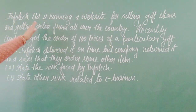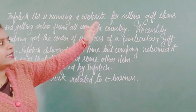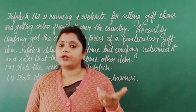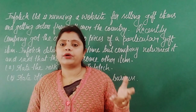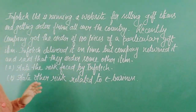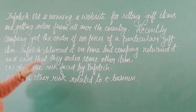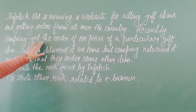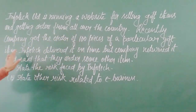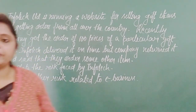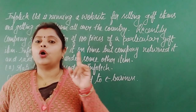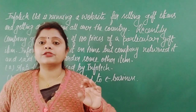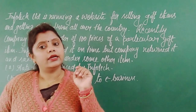Infotip Limited is running a website for selling its gift items. This is a common thing nowadays — people are making websites and uploading pictures of the items they are selling. So Infotip has uploaded pictures of gift items on the site and is getting orders from all over the country. Recently the company got an order of 100 pieces of a particular gift item.